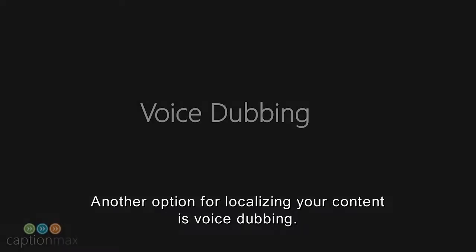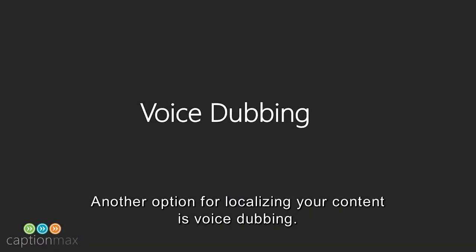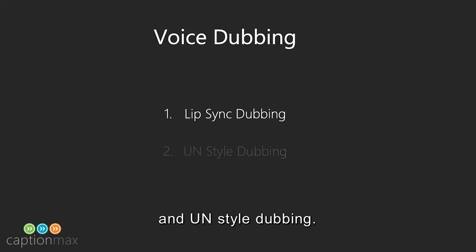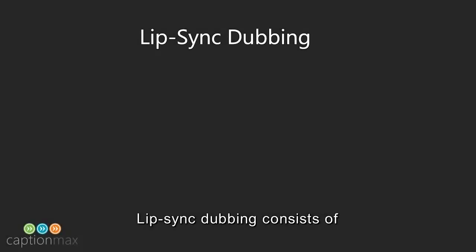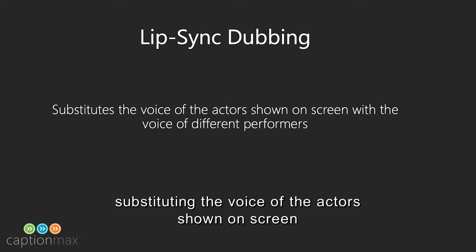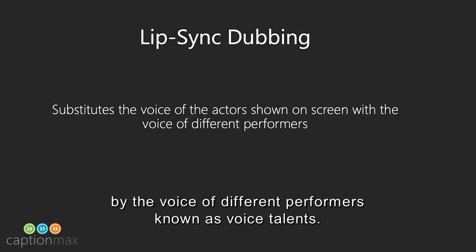Another option for localizing your content is voice dubbing. There are two different kinds of dubbing to choose from: lip-sync dubbing and UN-style dubbing. Lip-sync dubbing consists of substituting the voice of the actors shown on screen by the voice of different performers, known as voice talents.